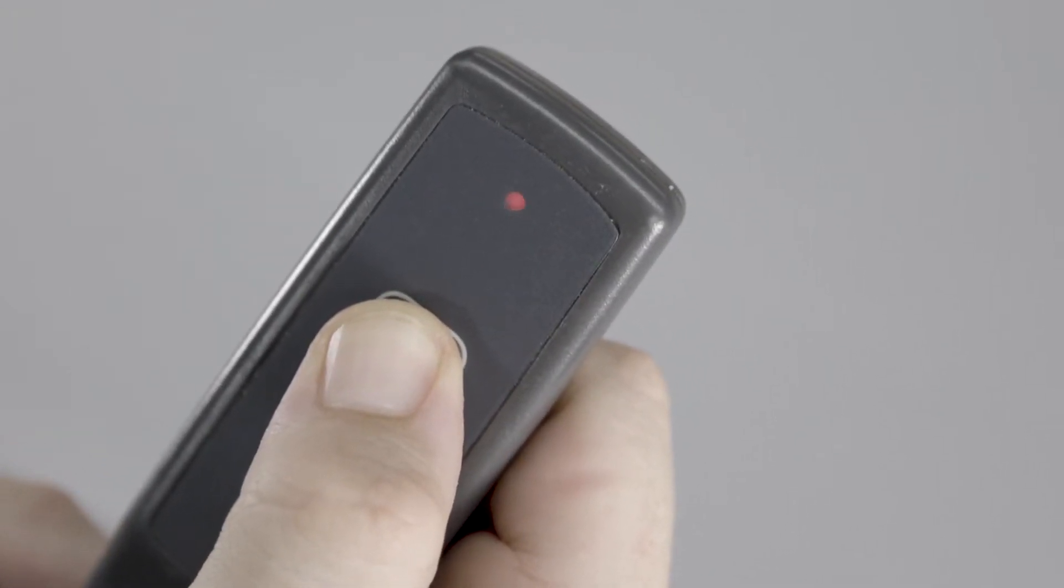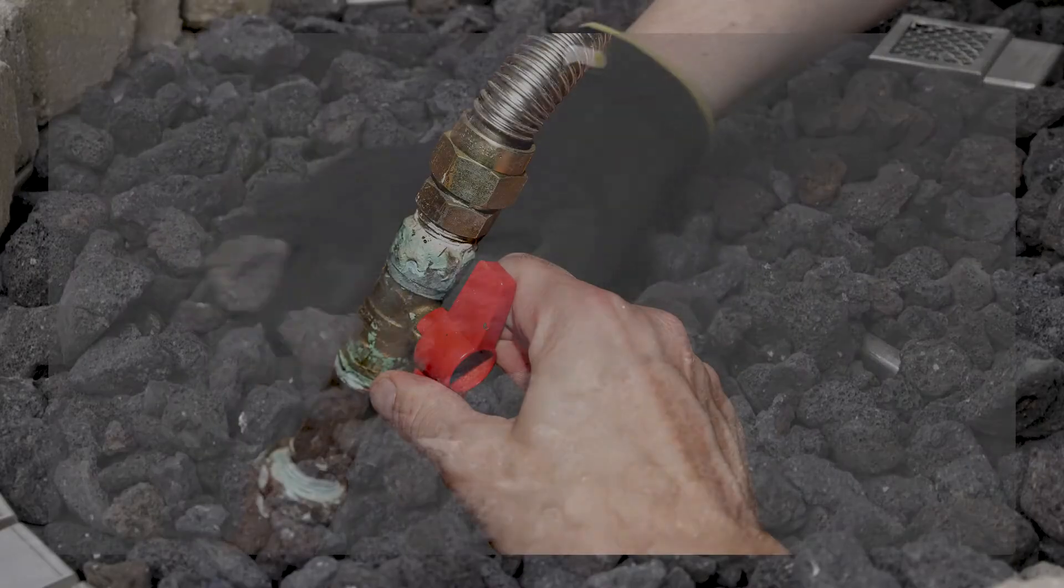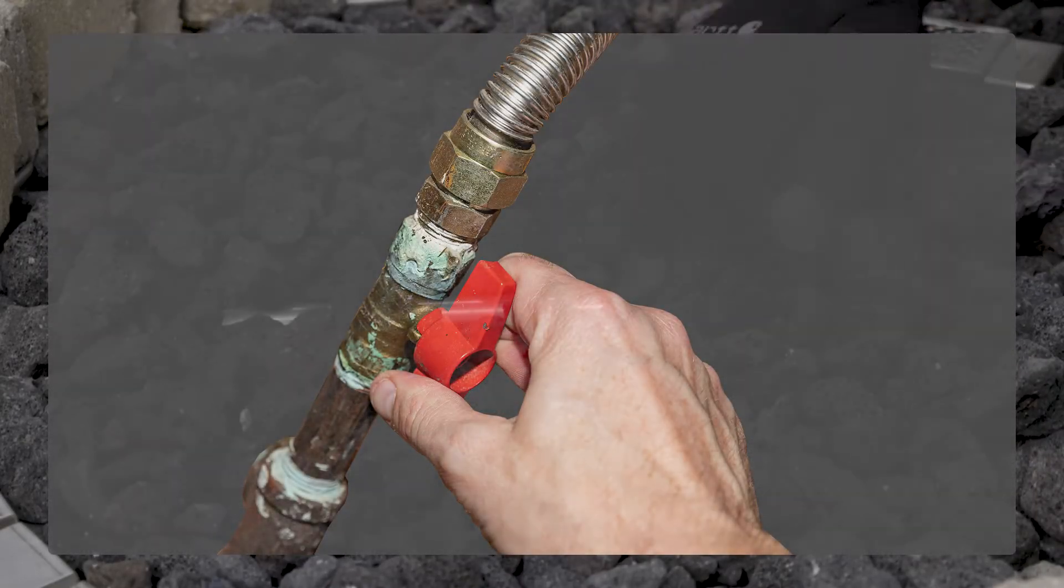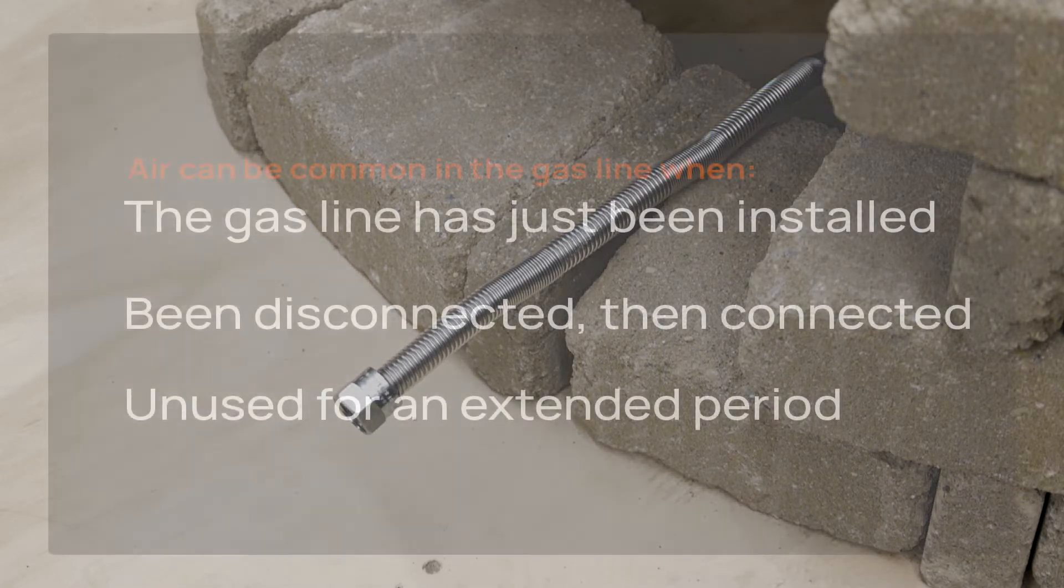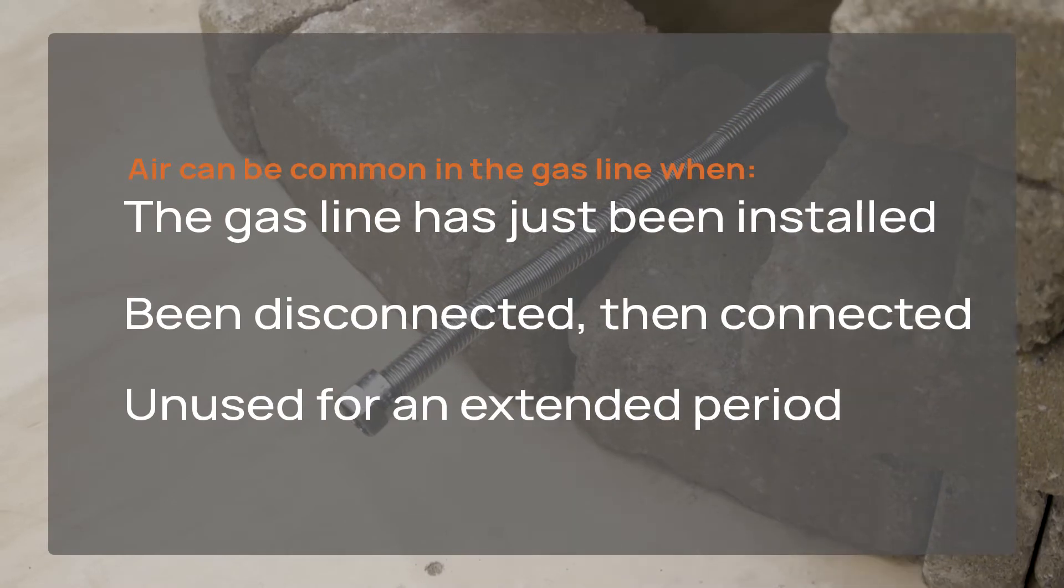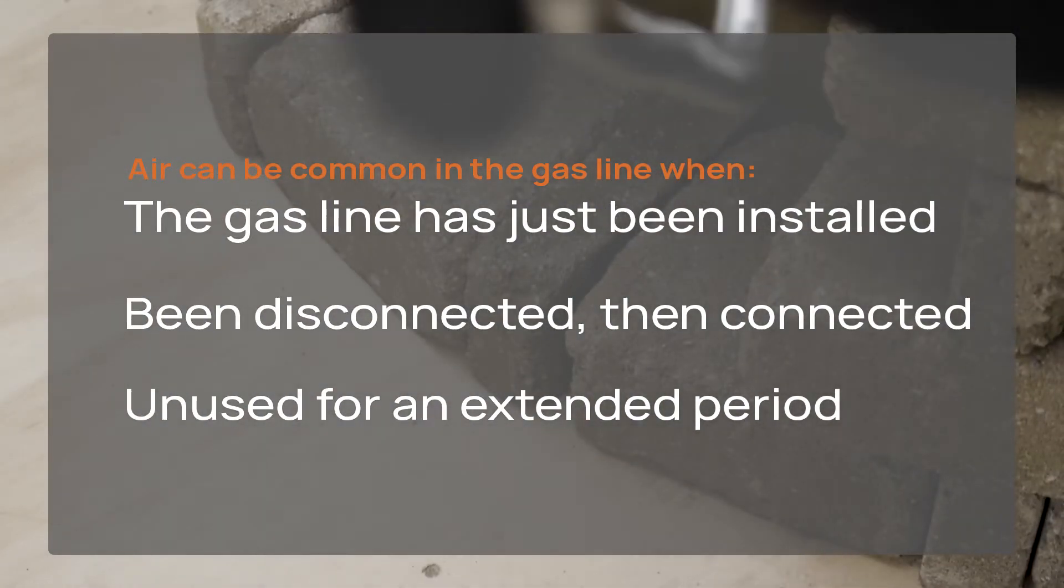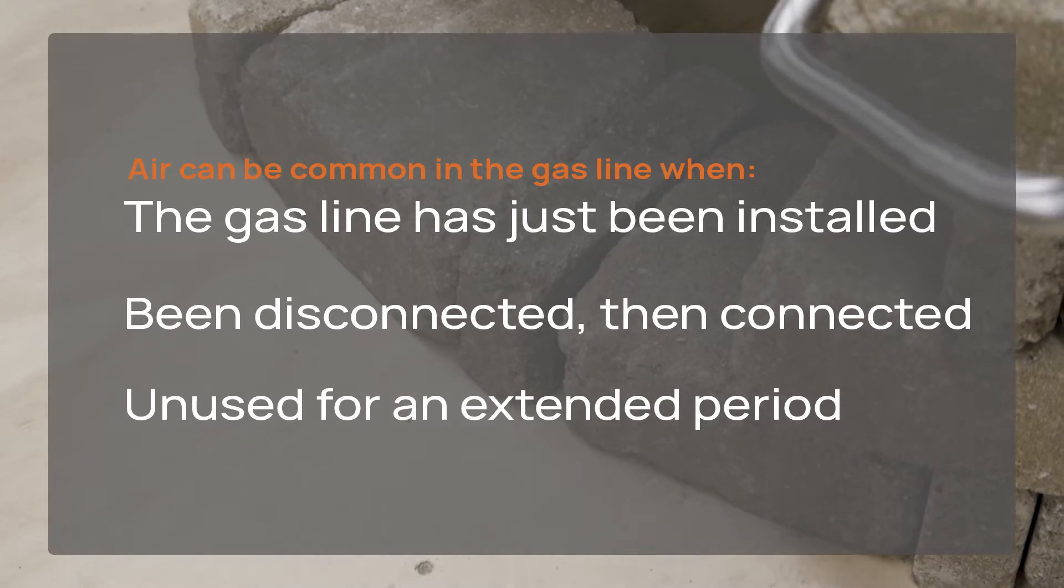Ensure gas supply is turned on. Ensure that the gas line is purged of air. Air is common in the gas line if the appliance has just been installed, has been disconnected then reconnected to the gas line, or if the appliance has been unused for an extended period. There is a possibility that air can build up in the gas line.